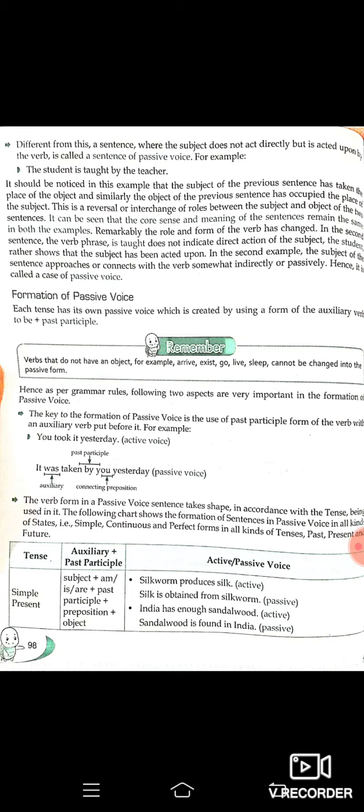In the formation of passive voice, each tense has its own passive voice which is created by using a form of the auxiliary verb 'to be' plus past participle. The key to the formation of passive voice is the use of the past participle form of the verb with an auxiliary verb placed before it. For example: 'You took it yesterday' (active voice) becomes 'It was taken by you yesterday' (passive voice). The auxiliary used is 'was' and the connecting preposition is 'by.'